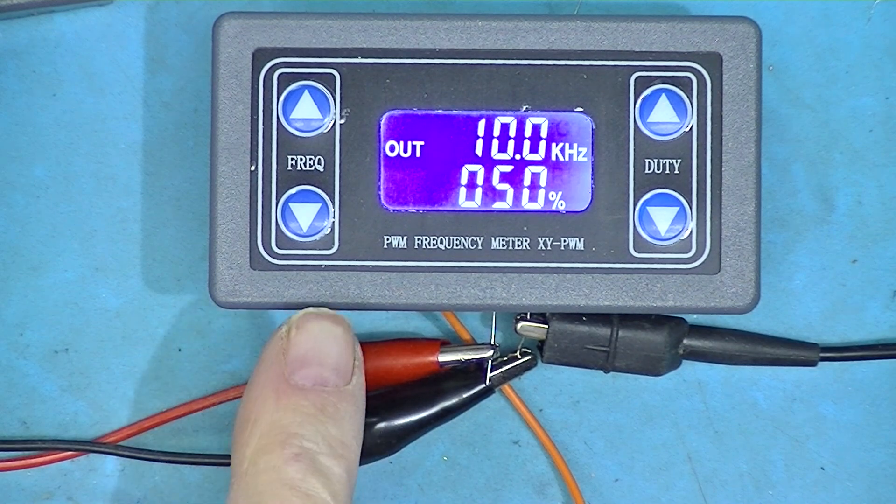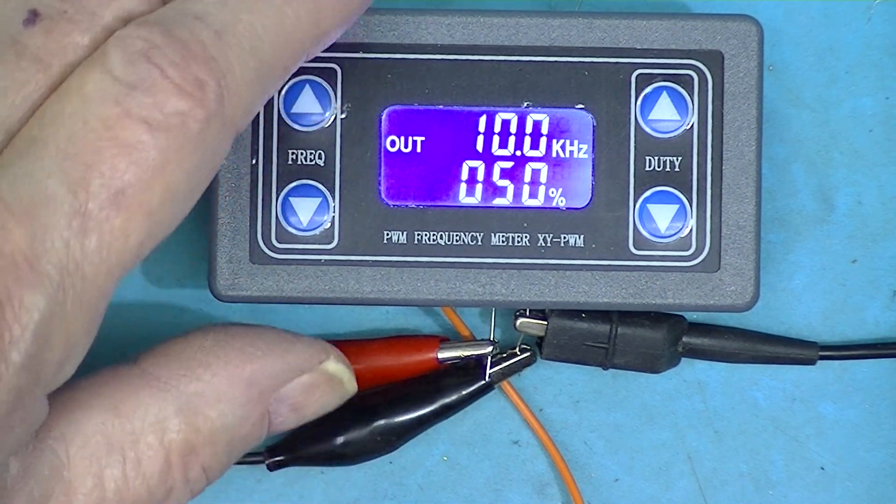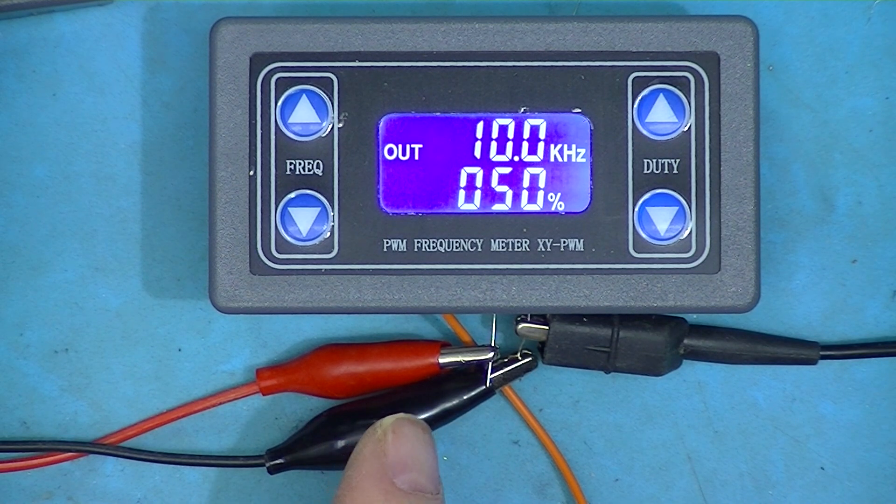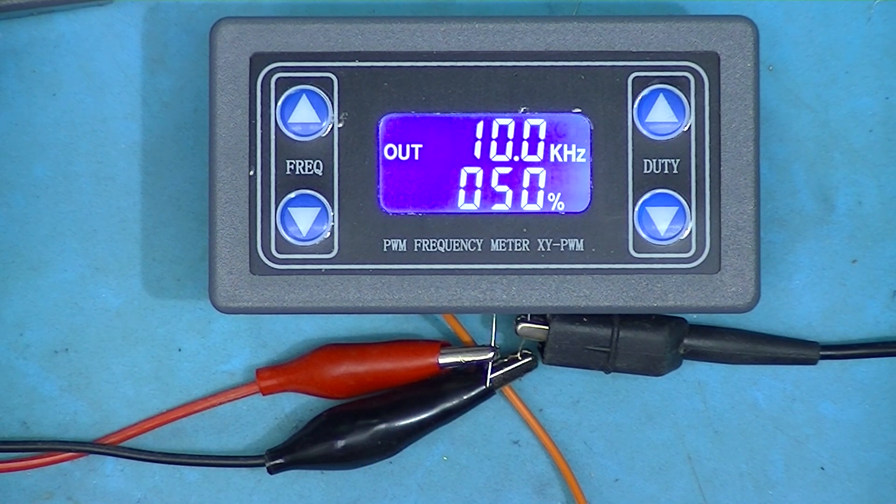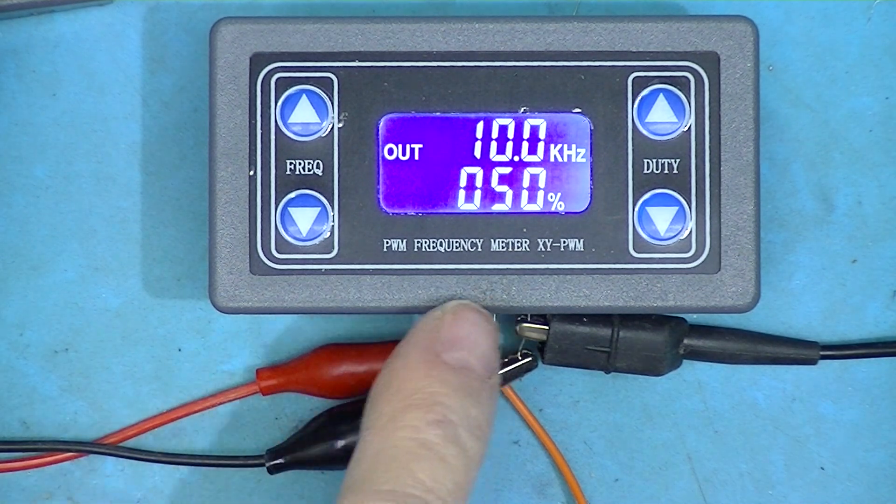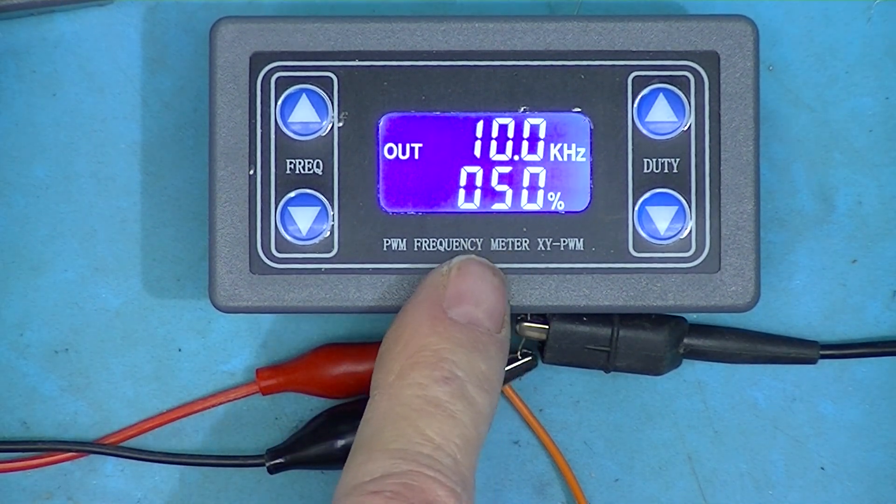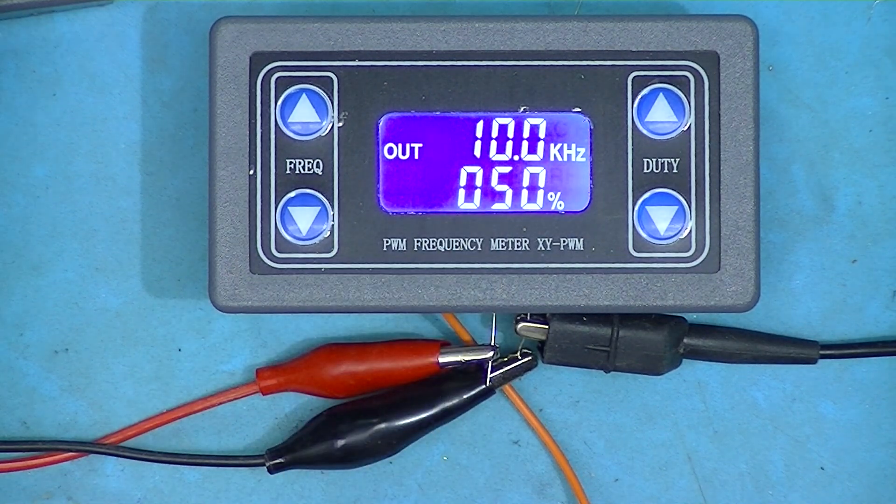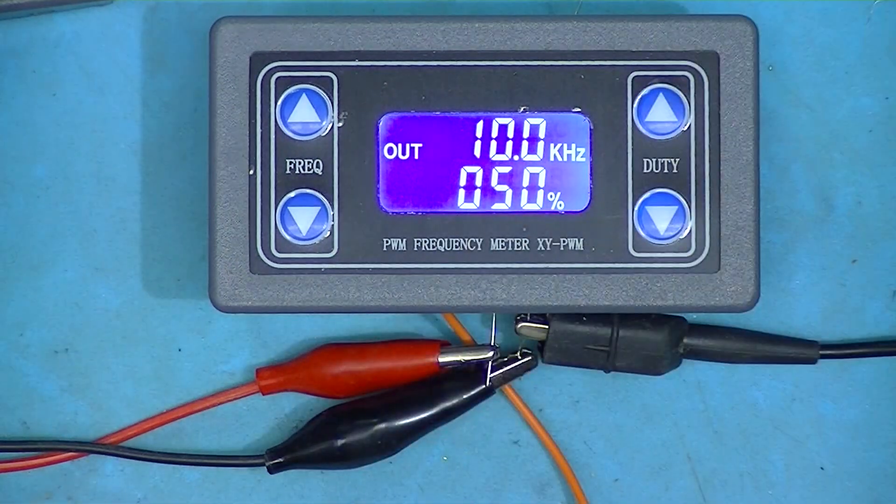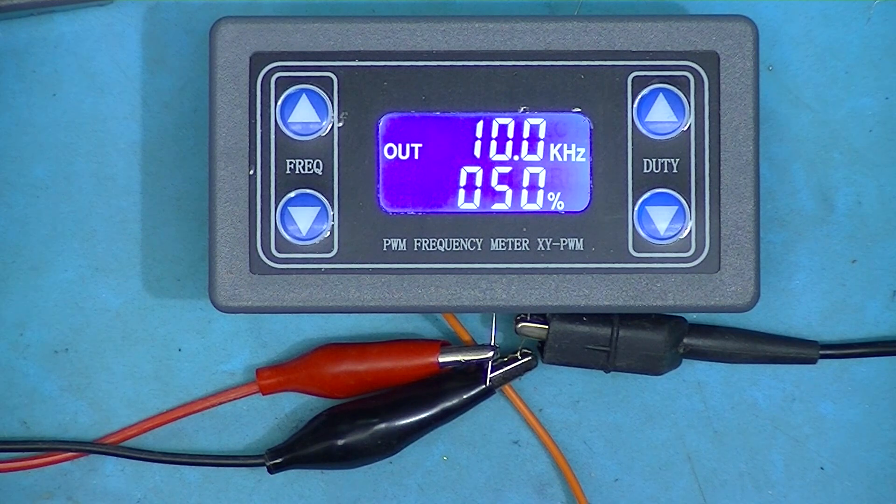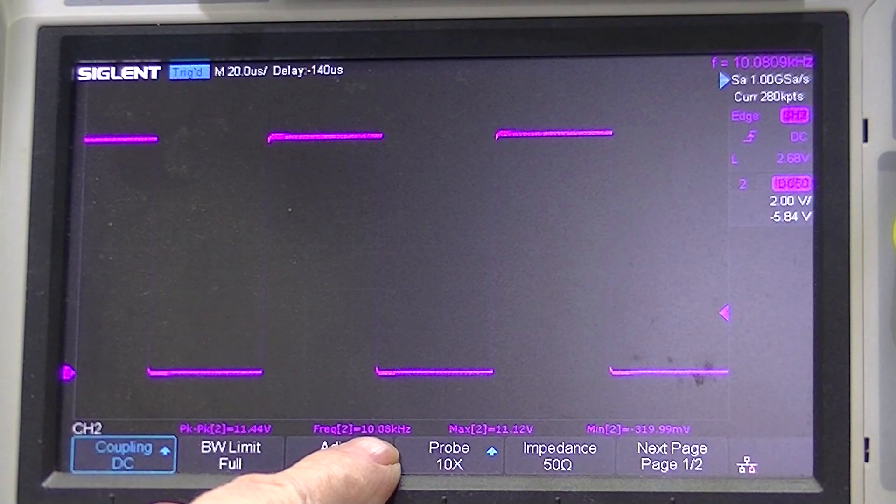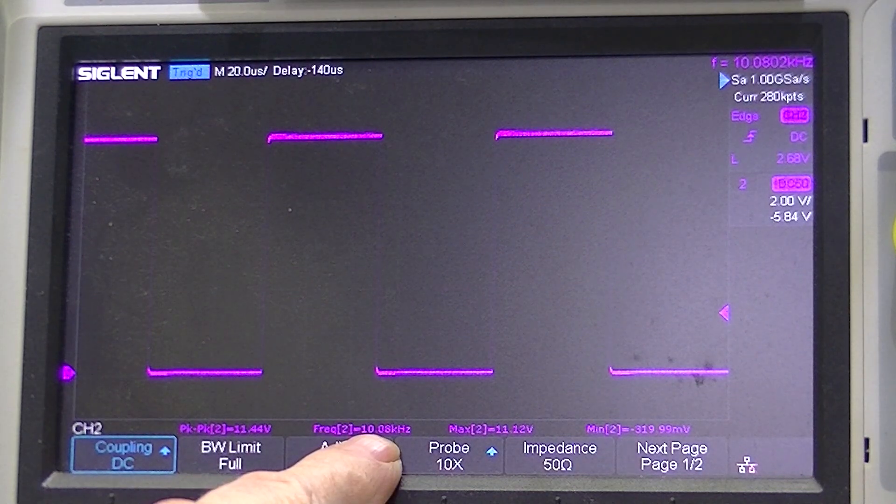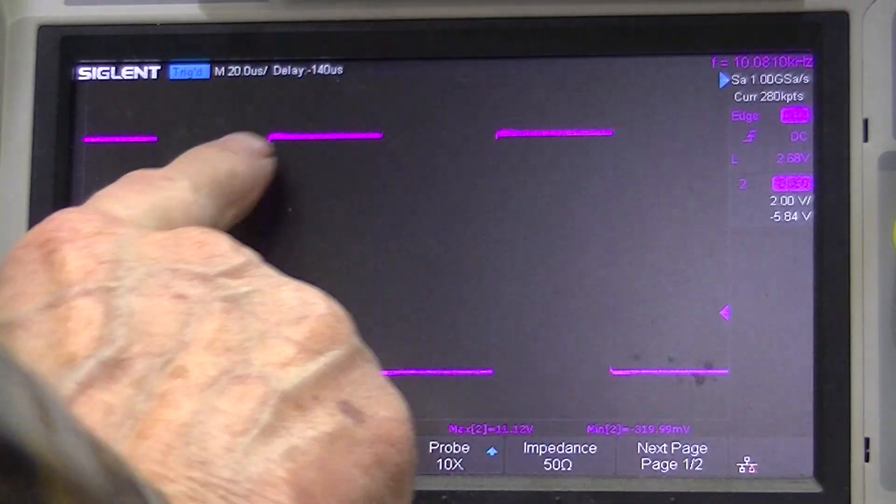Here's the eBay variable pulse-width square wave generator. Although right now it's outputting square waves. 10 kilohertz, and here it is on the oscilloscope, 10 kilohertz, 10.08 on the oscilloscope frequency meter. It's a nice-looking pulse.